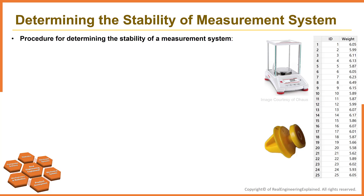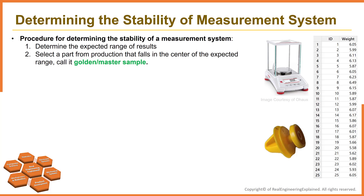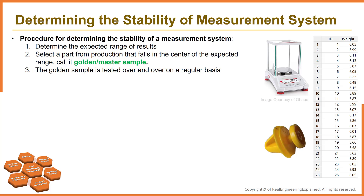The procedure for determining the stability of a measurement system using a control chart is as follows. Step 1: determine what the expected range of results is for a given measurement system — this is the range you would expect from production samples over time. Step 2: select a part from production that falls in the center of the expected range of results, and designate it as the master sample, golden sample, or gauge block for the stability analysis. Step 3: the master sample is tested repeatedly on a regular basis. How often should you measure? It depends on how often the measurement system is used. For example, if the measurement system is used on each shift, run the master sample once per shift.